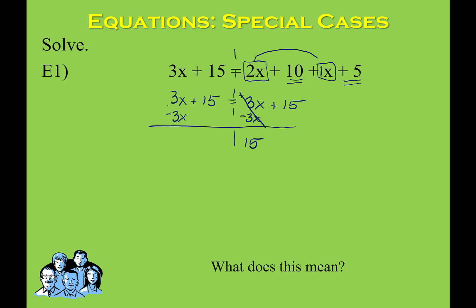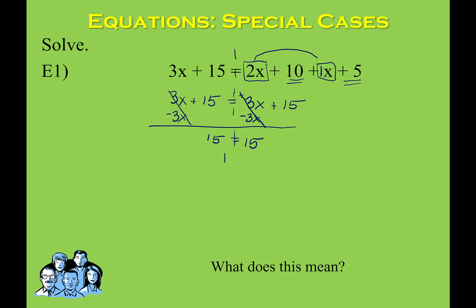On the left side, I also have 3x minus 3x, which is 0. So my x's are gone on both sides of my equation, and now I have 15 equals 15. In this situation, we ended up with a statement that is true. Do you agree that 15 equals 15? So when the variable disappears and you're left with a true statement, then that means that the solution is all real numbers.